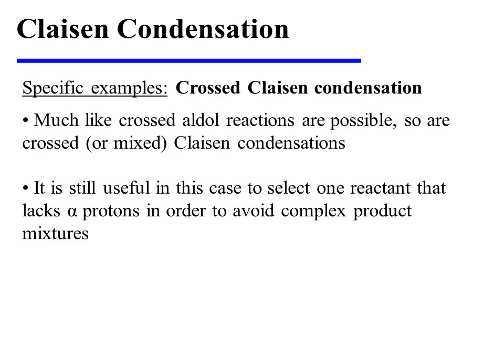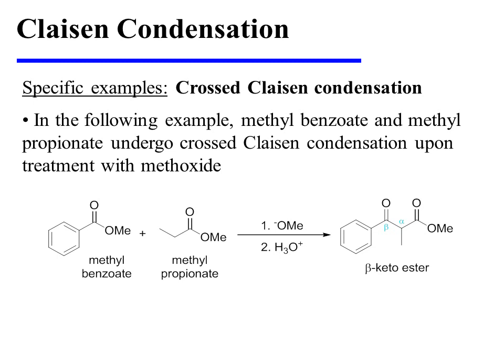In the preceding video on the aldol reaction, we saw that crossed aldol reactions are possible. Crossed or mixed Claisen condensations are also possible. It is still useful in this case to select one reactant that lacks alpha protons in order to avoid complex product mixtures. In the following example, methylbenzoate and methylpropionate undergo a crossed Claisen condensation upon treatment with methoxide. Notice that methylbenzoate possesses no alpha protons, and therefore only methylpropionate will be enolizable.